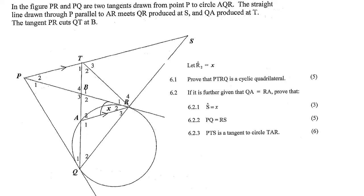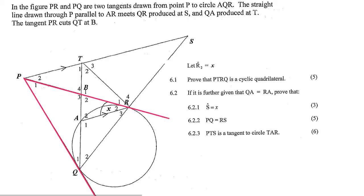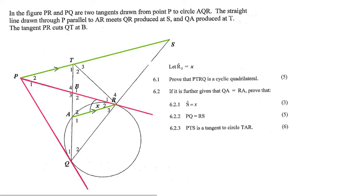In this question we are given two tangents: PR is a tangent and PQ is a tangent. The other information includes that these two lines are parallel, so remember those are also going to be parallel. They've also told us to let R2 equal to x, and here we can see that that's x already.